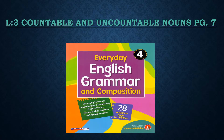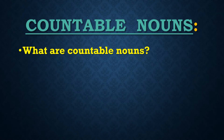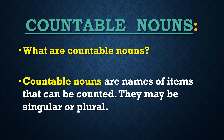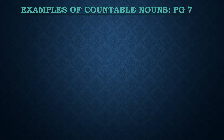Now I want you to take out your grammar book and refer to page number 7 — it is lesson number 3, countable and uncountable nouns. To start with, let us see what are countable nouns. Countable nouns are names of items that can be counted. They may be singular or plural. Let us see a few examples. On page number 7, there are 6 pictures. We have to count and write the number of people, animals or things for each picture.